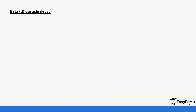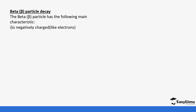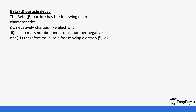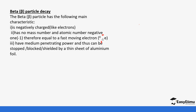The next particle is the beta particle. The beta particle has the following characteristics: it is negatively charged, like electrons — not electrons per se, but like electrons. It has no mass number, and its atomic number is negative, therefore it is equal to a fast-moving electron.